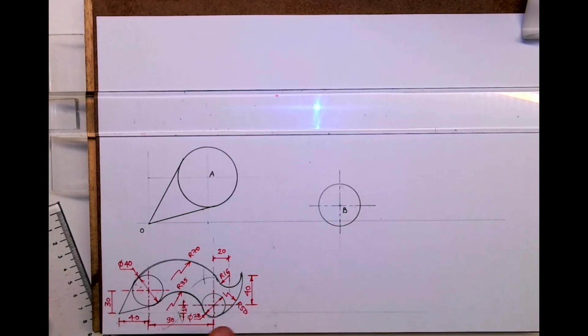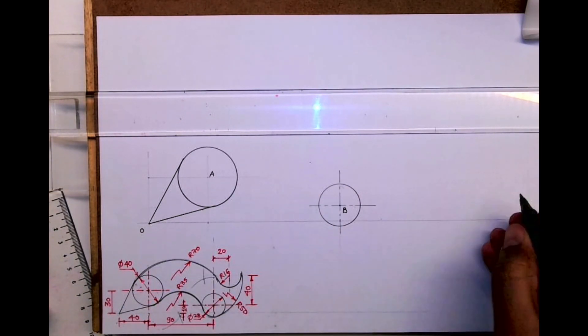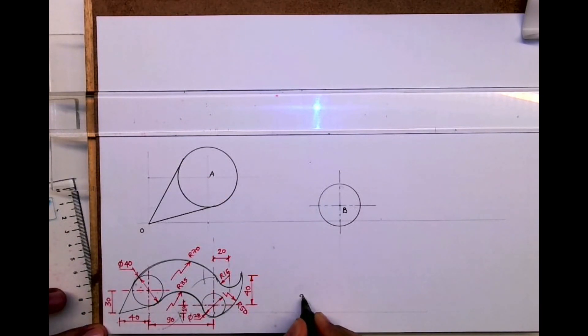Now this is point B. Now we need to draw this curve. It's an external curve. Let's say this is point A and this is point B. So from A we need to cut 20 plus 35, which is 55.